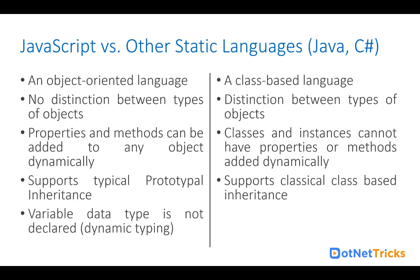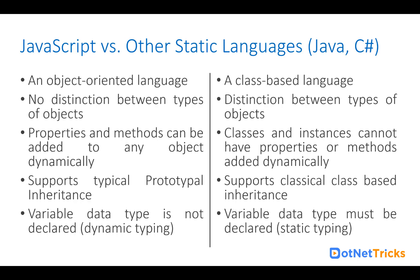In JavaScript, variable data types are not declared. When we declare a variable in JavaScript, we never mention the data type — we always define a variable like: var x = 5. But in Java and C#, we have static typing, so when declaring a variable it is mandatory to specify the data type, for example: int x or string str = value. In JavaScript, the data type is decided at runtime because JavaScript is a dynamic language, whereas in C# and Java the data type is decided at compile time, which is why they are called static languages.